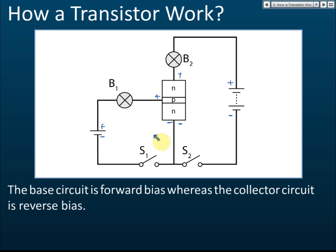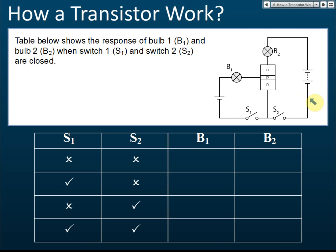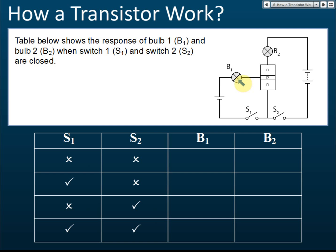Now let's see how a transistor works. This connection is correct — the base is forward bias and the collector circuit is reverse bias. There are two bulbs here. An experiment is done on this circuit. We have two switches, switch one and switch two, and bulbs B1 and B2. In the first experiment, switch one is off. When switch one is off, will bulb one light up? It won't light up because there's no current flow — switch off means current cannot flow.